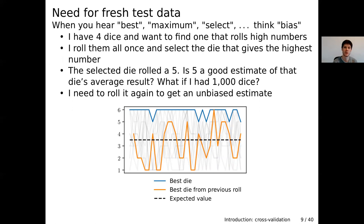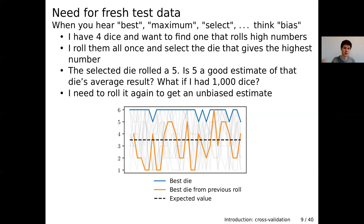Once we have performed this procedure to choose the model parameters, we cannot estimate how well it performs on the same participants — because this estimate will be biased. Whenever we select the best of something, when we choose the parameters that work best on one sample of data, naturally they will work well on that same sample. So if we want to know how well they will perform on new, unseen examples, we need to introduce some fresh data that the model hasn't seen and evaluate its performance on that data.